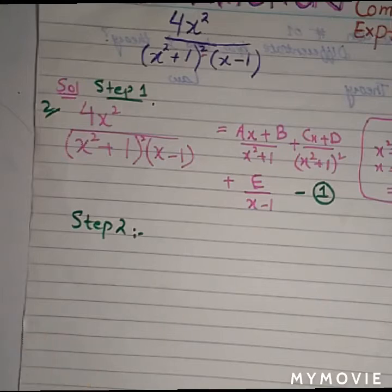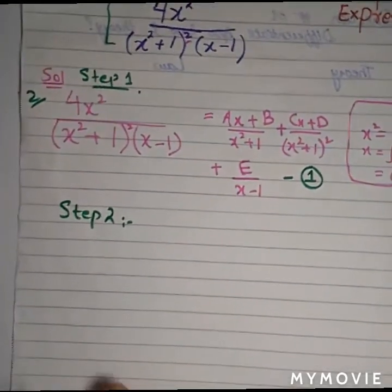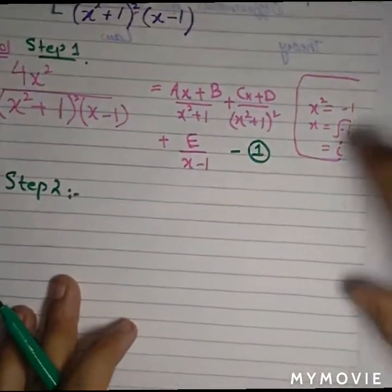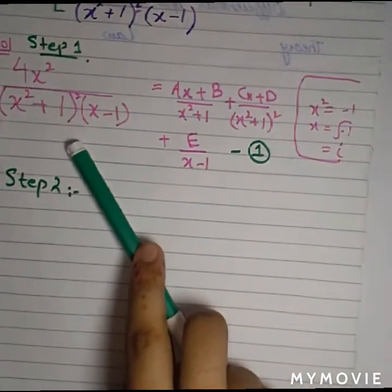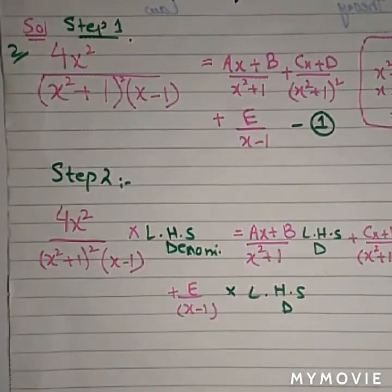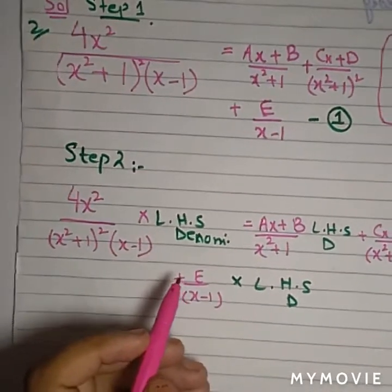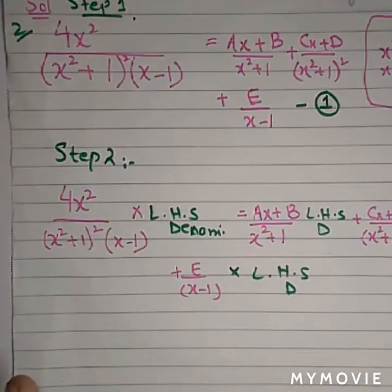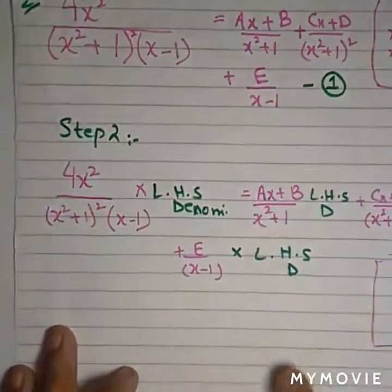Now the work is not as difficult because much of the difficult work is done in the first step. The first step has two marks, so you should follow proper steps in any question because each step contains its special marks. Now you have to multiply the denominator of the left-hand side to the right-hand side as I told you.